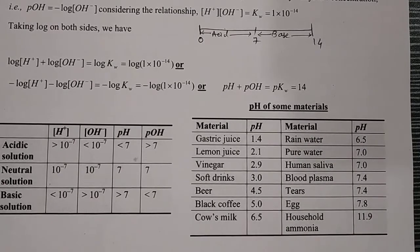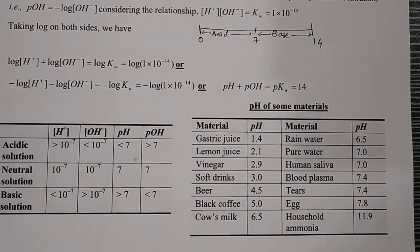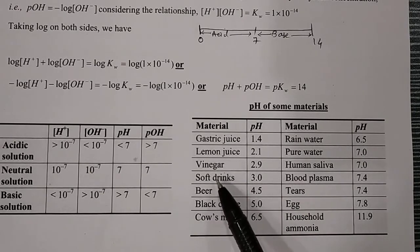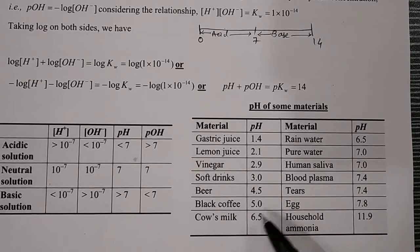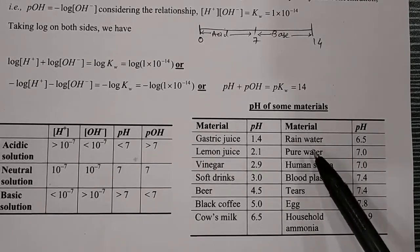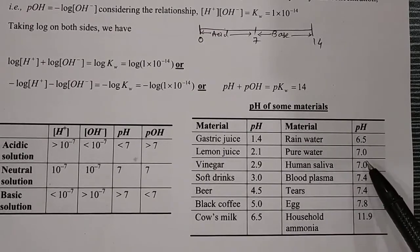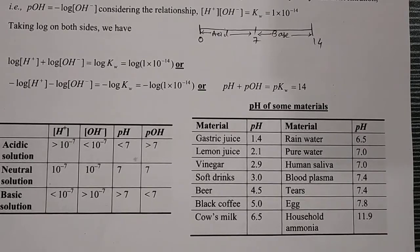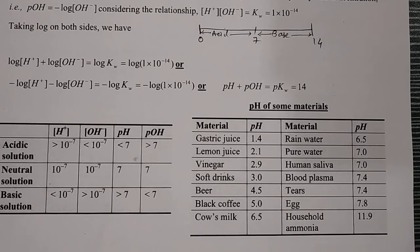Here are some common species and their pH values: gastric juice approximately 1.4, lemon juice 2.1, vinegar 2.9, soft drinks 3.0, beer 4.5, black coffee 5.0, cow milk 6.5 (near neutral, used as an antacid), rain water 6.5, pure water 7.0, human saliva 7.0 (slightly acidic in the morning), blood plasma 7.4, tears 7.4, egg 7.8 (slightly basic), and household ammonia 11.9.